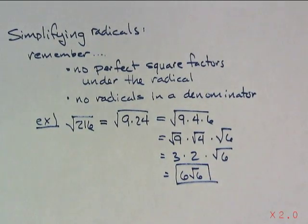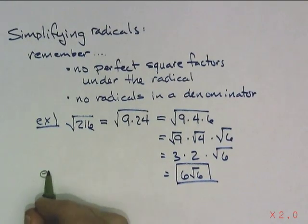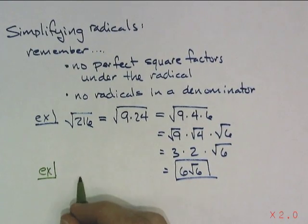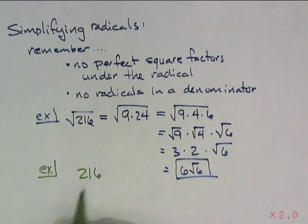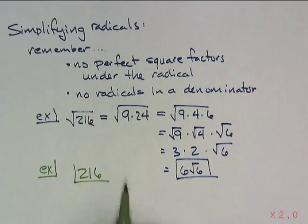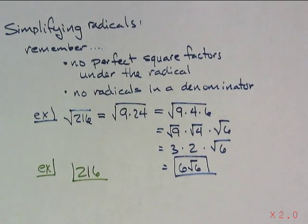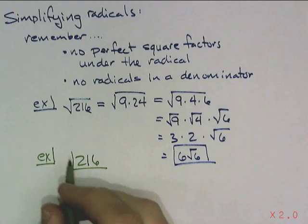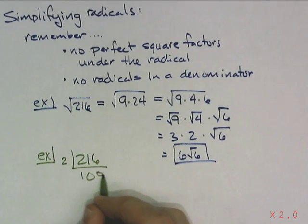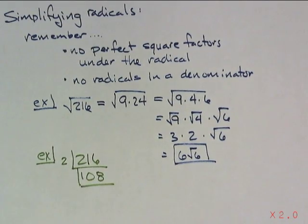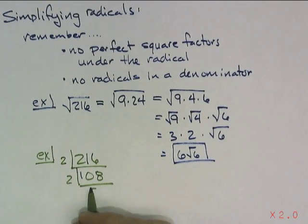That's all fine and good if you are a master of your perfect squares, and I am not. So what I like doing — this is kind of the jailbreak. What you do is you take your number and start factoring only with prime numbers. The easiest prime number is 2 if it's even, so 2 goes into 108, and I do it kind of upside down.